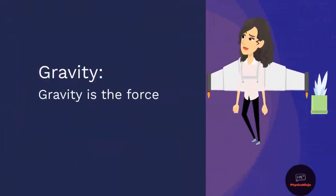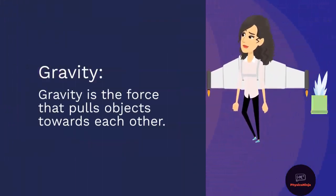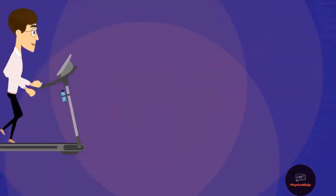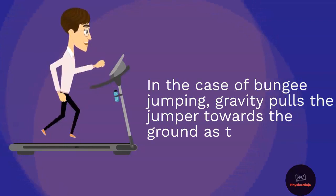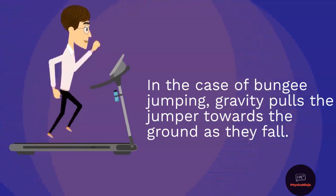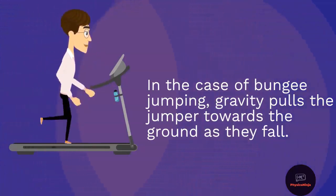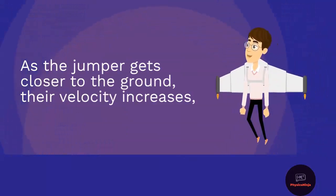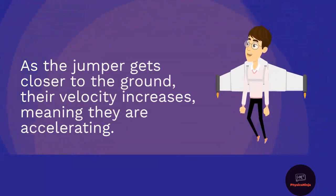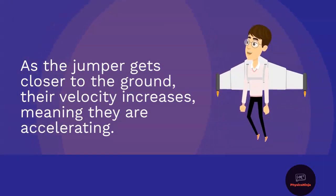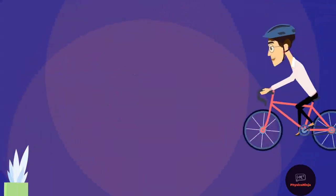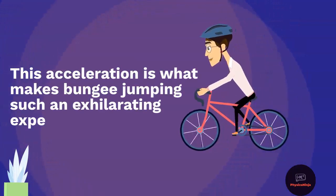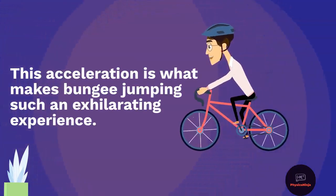Gravity is the force that pulls objects towards each other. In the case of bungee jumping, gravity pulls the jumper towards the ground as they fall. As the jumper gets closer to the ground, their velocity increases, meaning they are accelerating. This acceleration is what makes bungee jumping such an exhilarating experience.